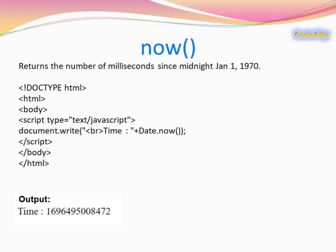The next is the now() method. Date.now() returns the number of milliseconds since midnight January 1st, 1970, up until the current time.